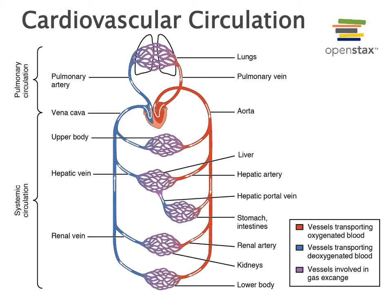Blood flows out of the heart into arteries. The largest arteries, known as elastic arteries, are able to stretch out in order to receive the increased volume of blood as blood is pumped out of the ventricles. The aorta is the major elastic artery that receives oxygen-rich blood at high pressure from the left ventricle, and then blood flows out of the aorta into smaller branches.